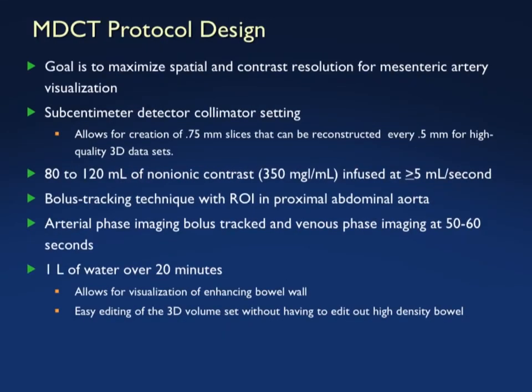For protocols, we always use thin sections — 0.75 millimeters reconstructed at 0.5 — which we love for doing 3Ds and MPRs. IV contrast is mandatory, ideally 5 cc's a second, though you can get by with 3. When imaging, if looking only at the SMA you can get by with 30 seconds, but often because of the various pathologies we're doing dual-phase imaging at about 30 and 60 or 65 seconds.